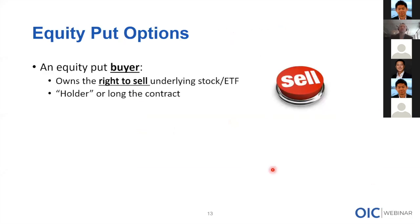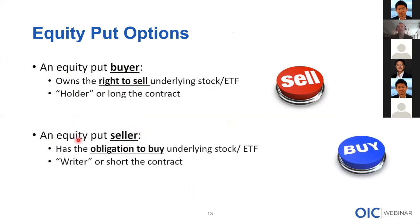Now let's look at put options. An equity put buyer pays for the right to sell underlying shares of stock — they are long the contract. An equity put seller has been paid; cash goes immediately into their account, and they have the obligation to buy shares of stock. They are the writer and they are short the contract.